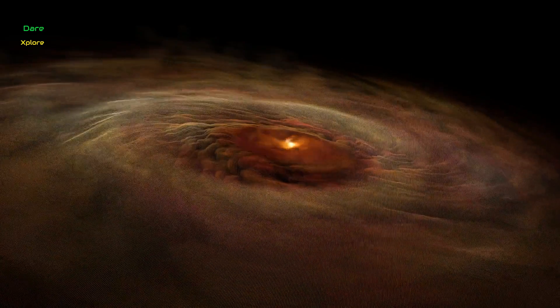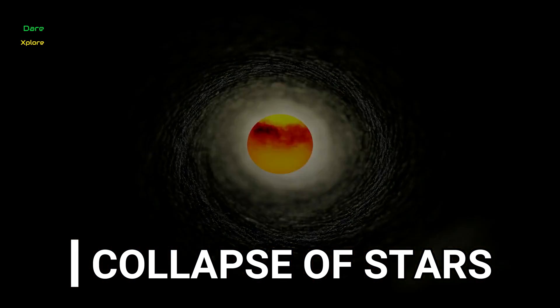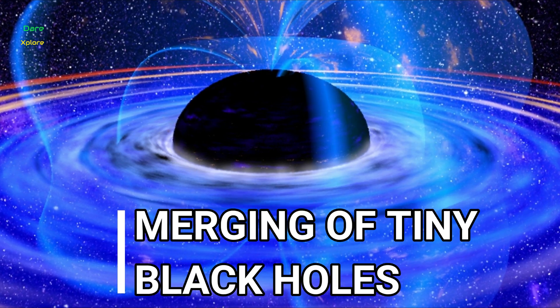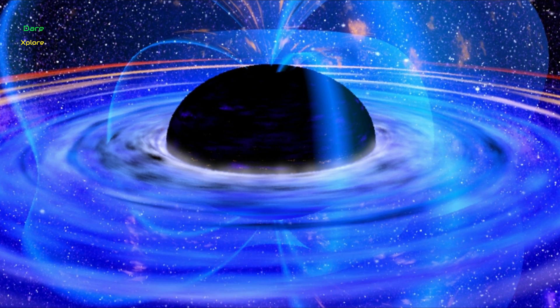When a larger star collapses, it continues to compress and creates a black hole. But when hundreds or thousands of tiny black holes merge together, they create supermassive black holes of millions of solar masses.